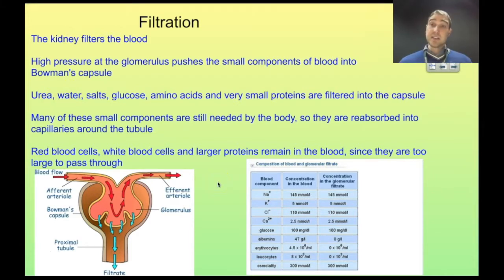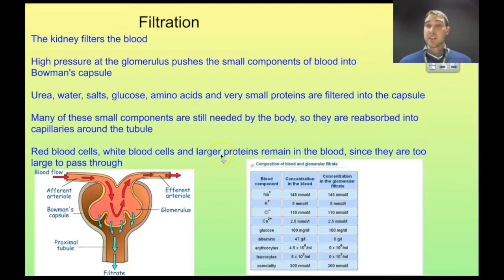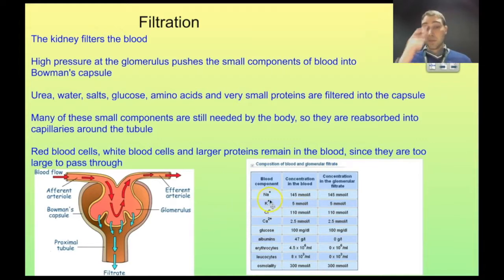The large things in the blood are too big to be pushed out of the capillaries. So red blood cells, white blood cells, and larger proteins shouldn't be filtered out. If they are present in the urine, this is a good sign that something is wrong with your health. Here we can see some of those components that are getting filtered out.